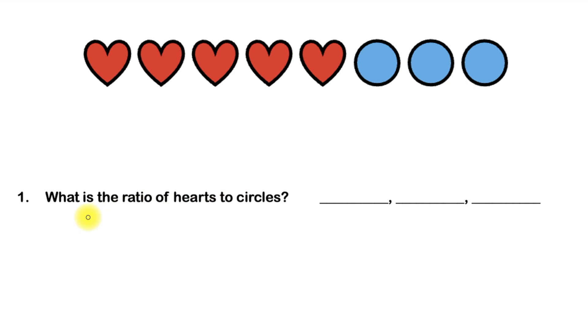And since they're asking for the ratio of hearts to circles, this word 'to' tells us the order of the terms in our ratio.